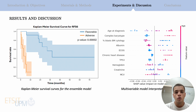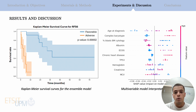In addition, to interpret how the multivariable model made its decisions, we employed the SHAP algorithm, which identified the most important variables influencing relapse-free survival. These included the age at diagnosis, the karyotype complexity, and the percentage of blasts in the bone marrow cytology. By understanding these factors, doctors can better tailor treatments for individual patients.